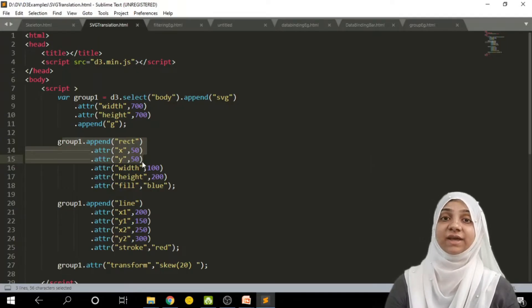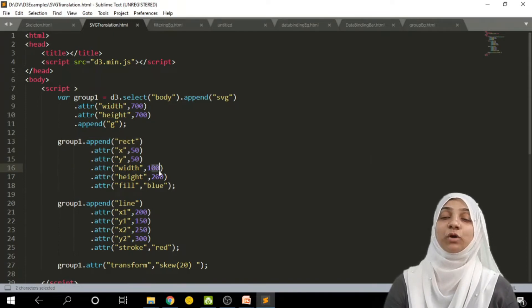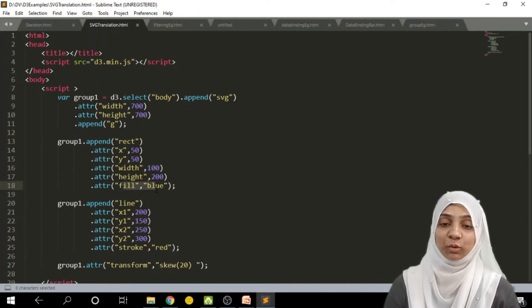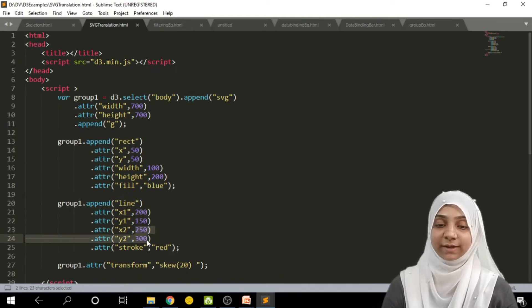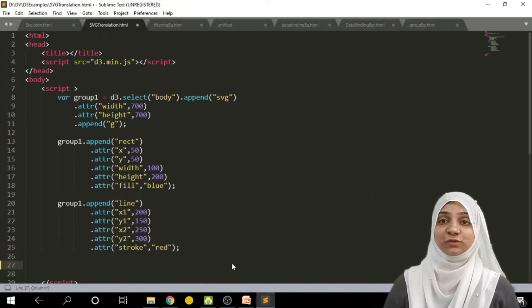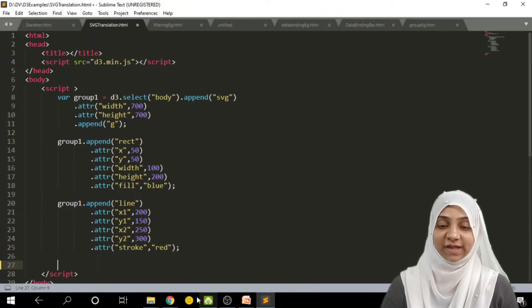Starting point of rectangle is at 50, 50, which is having height of 200 pixels and width of 100 pixels. And its color-filled pattern is blue. Now, within this group only, I have added one more line, that is from 200, 150, that is the first pixel. And second point is 250, 300, which is drawn with red in color. Now, these two elements are already within one group. Let us see how my web page looks like.